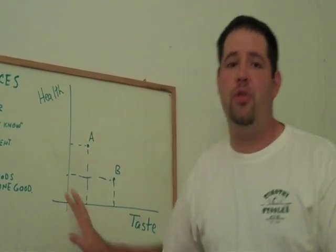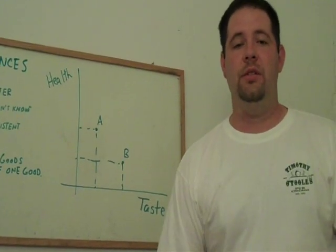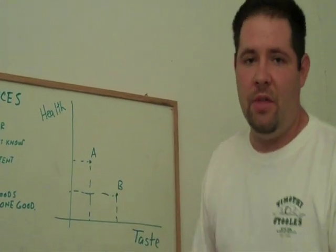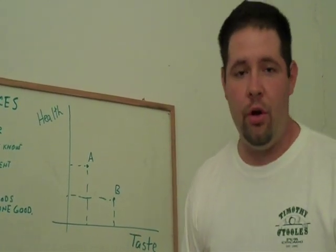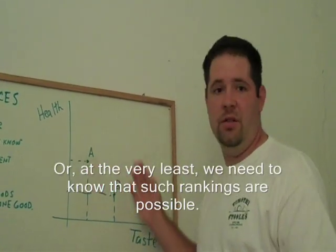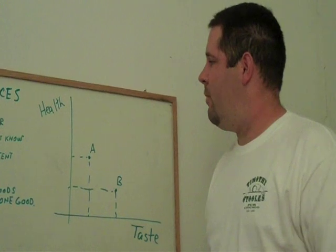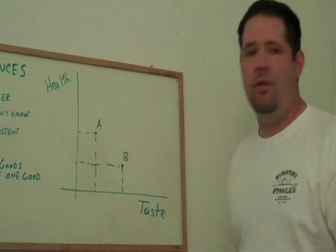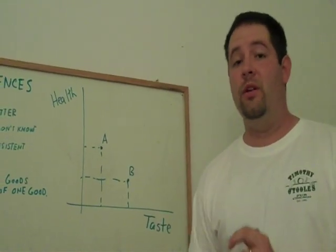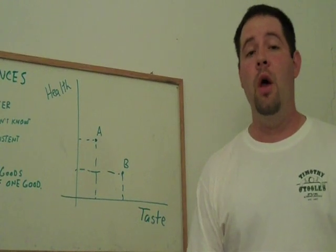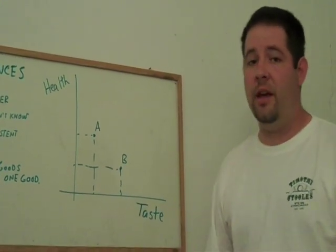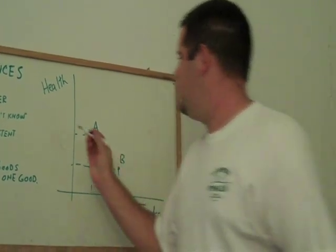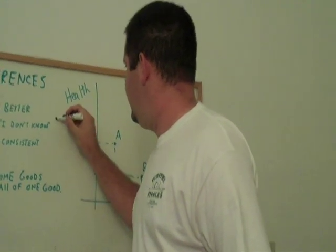When thinking about choices between bundles of goods, we want to be able to say how people would order or rank various bundles. To do that, we need to assume people don't just say 'I don't know.' If someone says 'I don't know, I don't care, just flip a coin,' we interpret that not as not knowing, but as being indifferent — and indifference is one of the valid choices. This property is known as completeness.